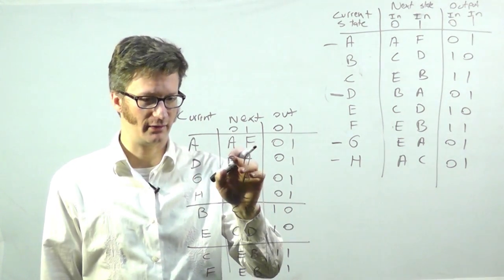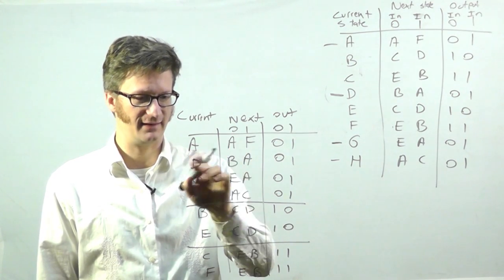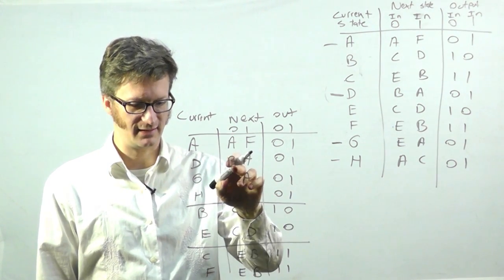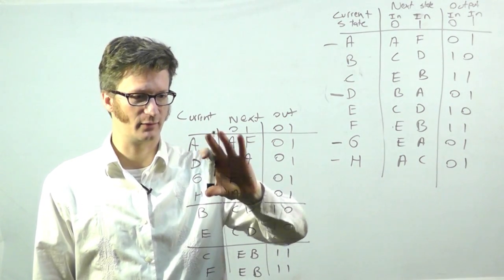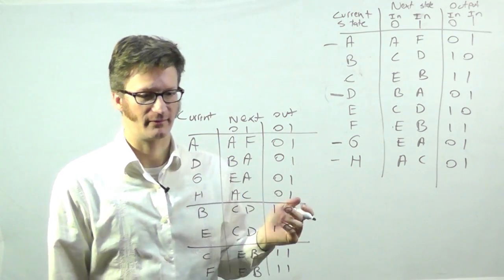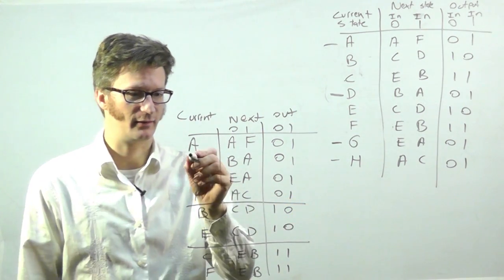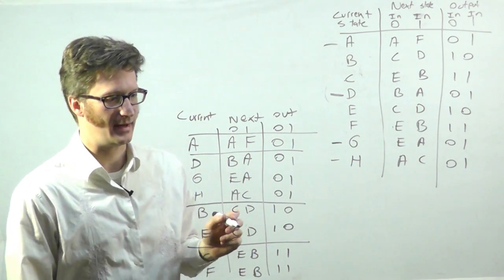So now I'm going to look at this state D. D doesn't do that, actually. D jumps to this group here. And this group for one. So it's different. So I'm going to separate that one from A.